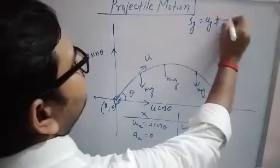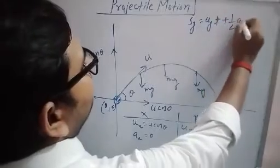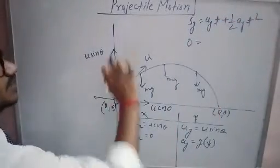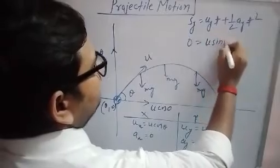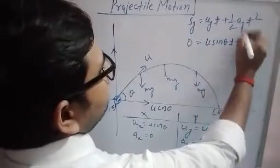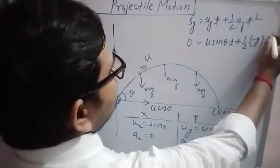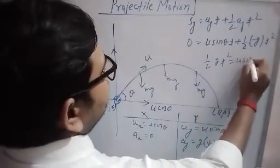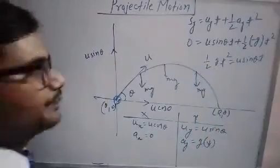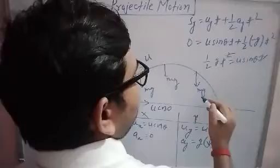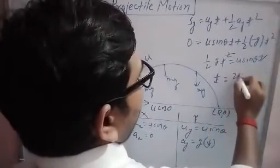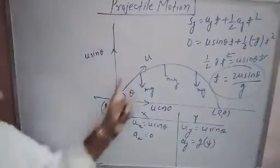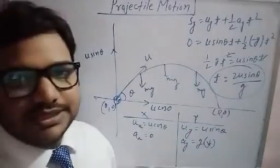Writing the equation for motion along the y-axis: s_y = u_y·t + ½·a_y·t². Since s_y is 0, u_y is u sin theta (vertically upward), and a_y is −g (downward), we get: 0 = u sin theta·t − ½g·t². Rearranging: ½g·t² = u sin theta·t. Cancelling t, we get t = u sin theta / g. So the total time of flight of a projectile projected from the ground is T = 2u sin theta / g.